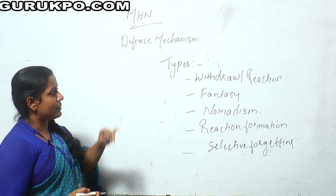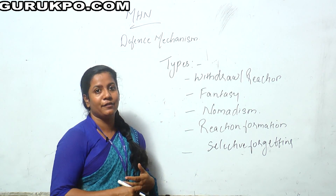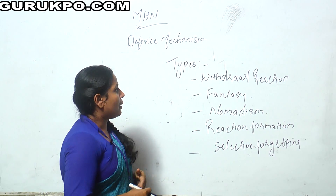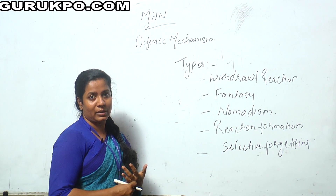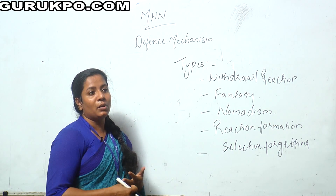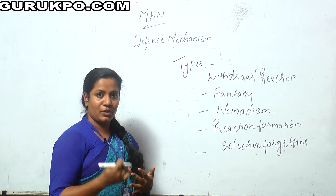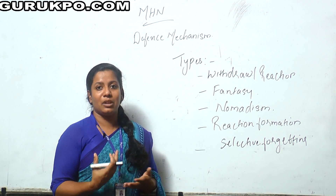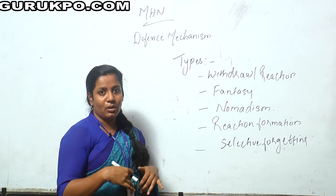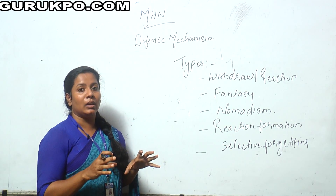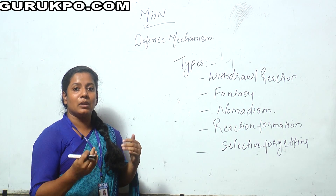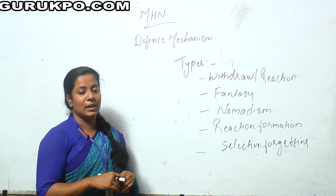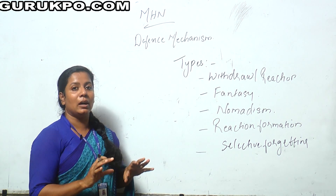Let's see the types. There are many types in defense mechanism, but I'm going to discuss a few of them in this class. First one is withdrawal reaction. For example, a student who wants to appear in an examination, if she appears and gets a failure result, instead of reappearing in the examination, she will withdraw herself from the examination out of fear of failing again.